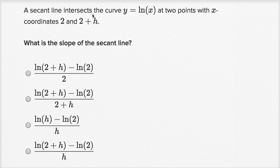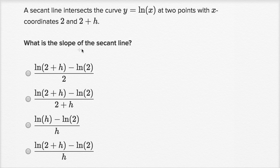A secant line intersects the curve y equals the natural log of x at two points with x-coordinates two and two plus h. What is the slope of the secant line?